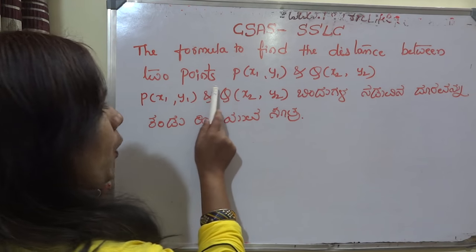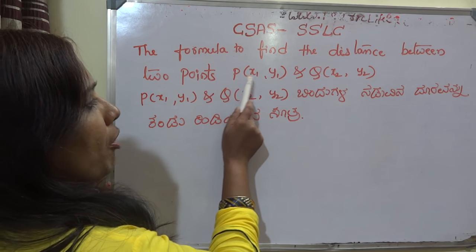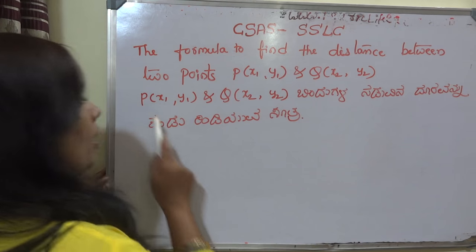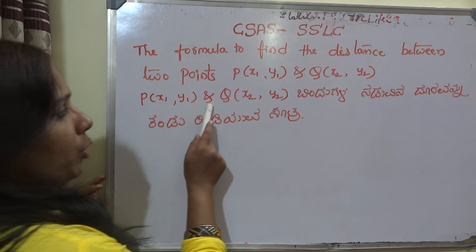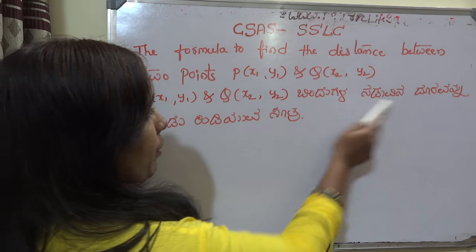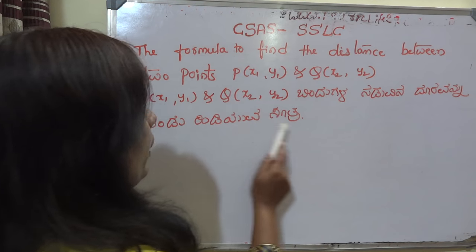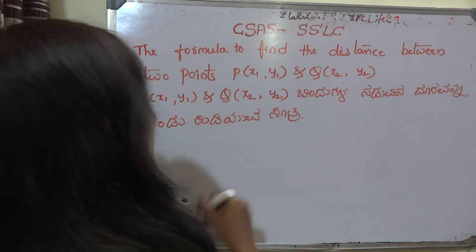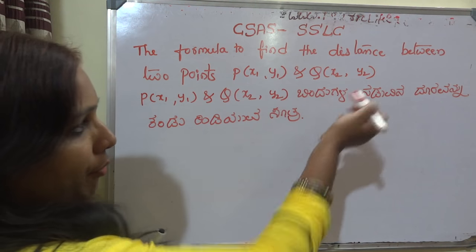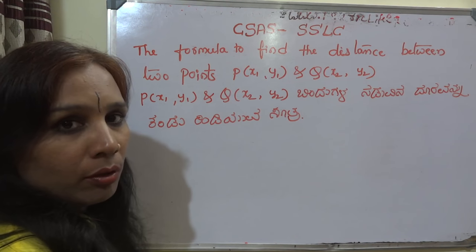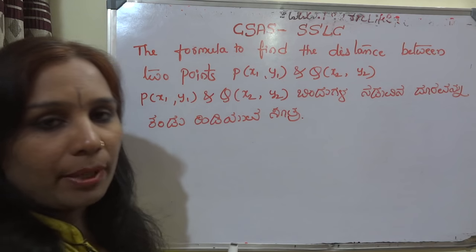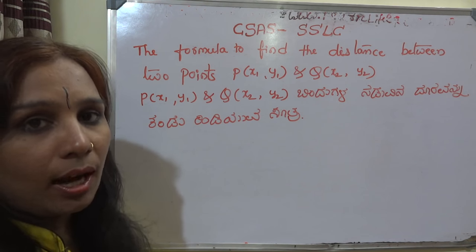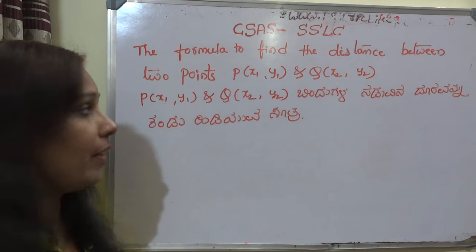Find the distance between two points P of x1,y1 and Q of x2,y2. To find the distance between two points P of x1,y1 and Q of x2,y2, we will follow the same method that we followed in finding the distance between the origin and the given point P of x,y.